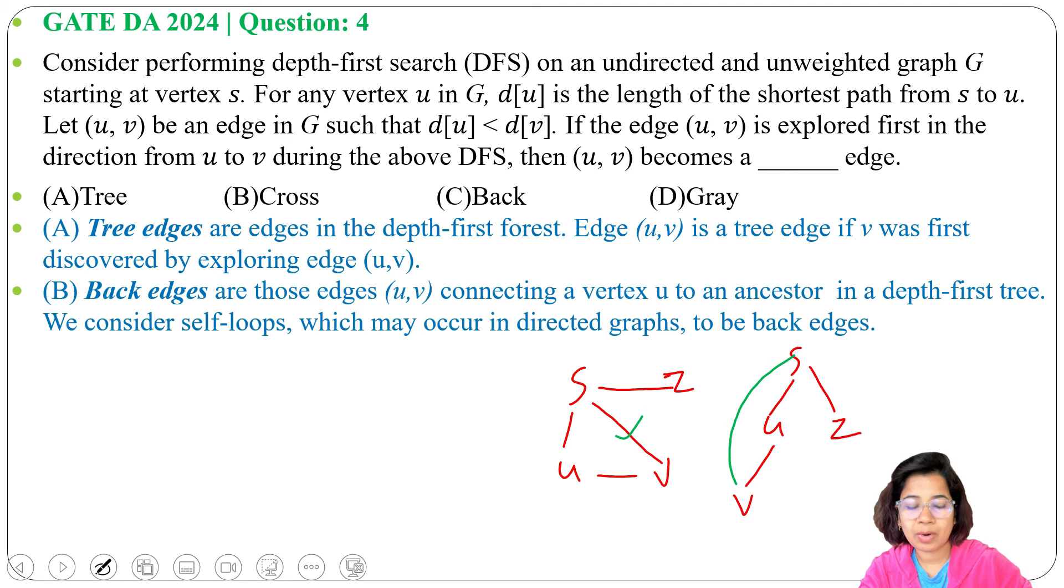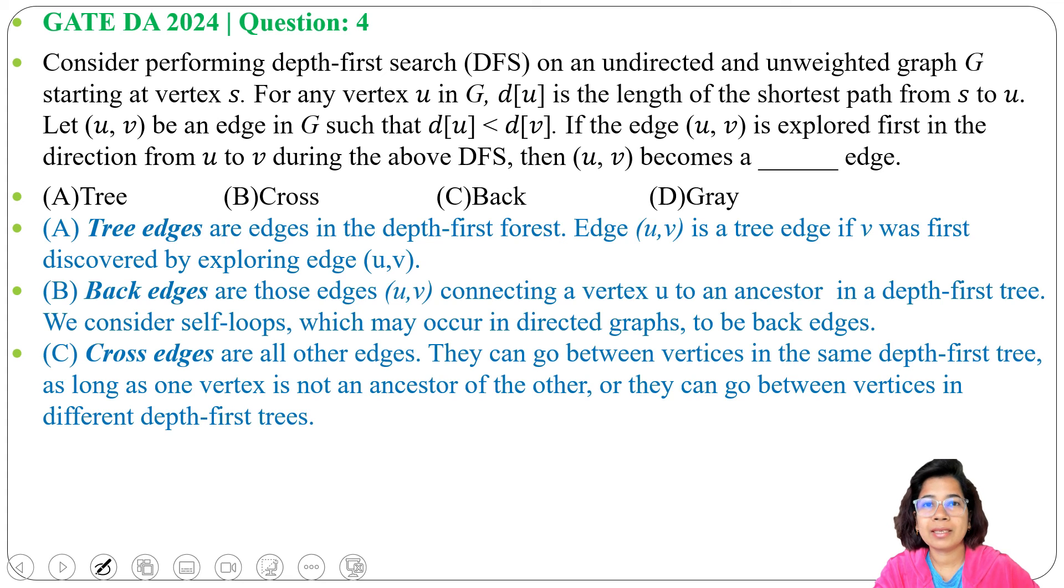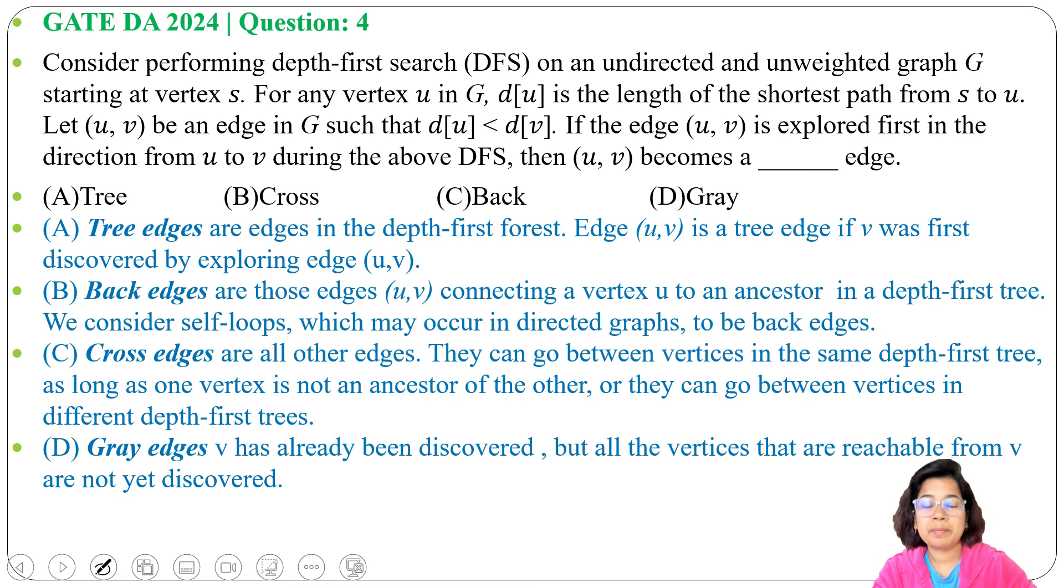Next is cross edges. Cross edges are the edges in the same level in depth-first tree. Next is grey edges. If v is already discovered, that is called grey edges.